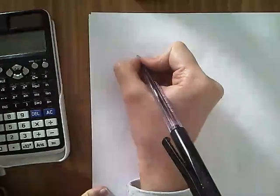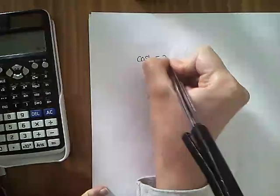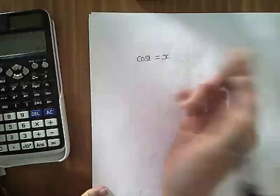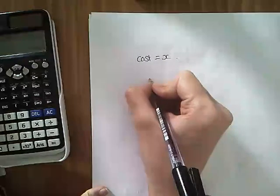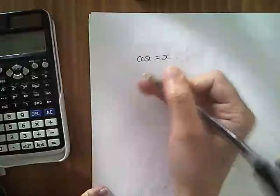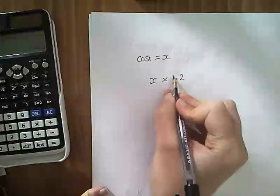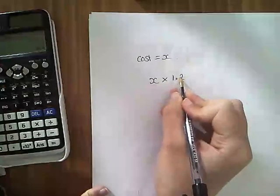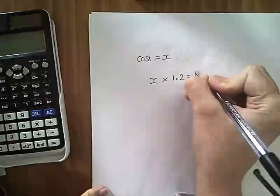So, if we have a cost, let's call our cost X. If I'm finding, if I'm adding 20% VAT to it, obviously, to find 20%, I'm timesing by 0.2. So, to find 20% and add it on, I'm timesing by 1.2. That times it by, it gives it itself, so the X, plus the 20%, times by 1.2. And I get a new cost, let's call that N.